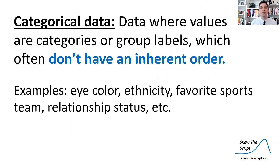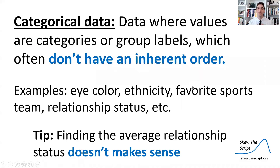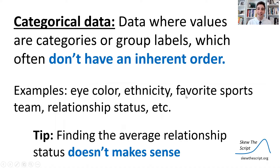Categorical data is data where values are categories or group labels, and those often don't have an inherent order. For example, eye color, ethnicity, favorite sports team, etc. Eye color, for example — there's no inherent order between green, brown, blue, etc. Another tip: think about whether finding the average makes sense. For relationship status — married, single, in a relationship — it doesn't really make sense to average those values. So that's how we can tell it's categorical.